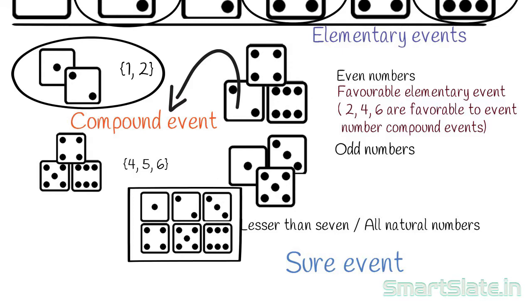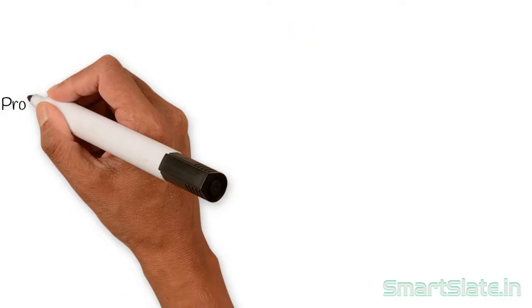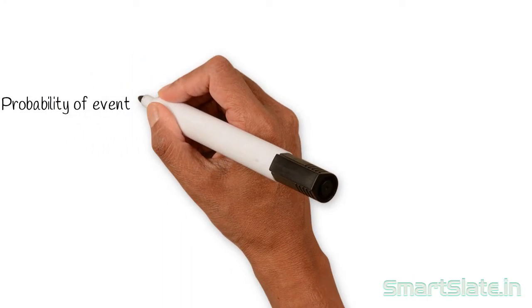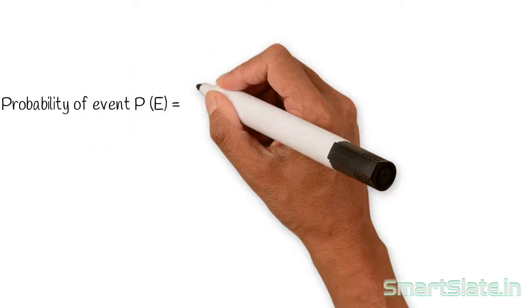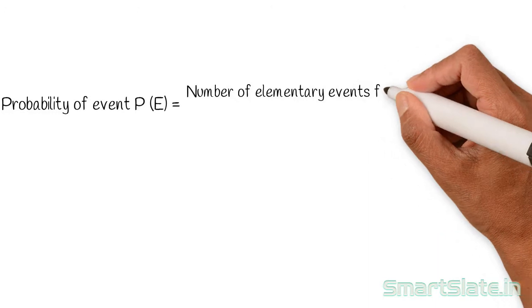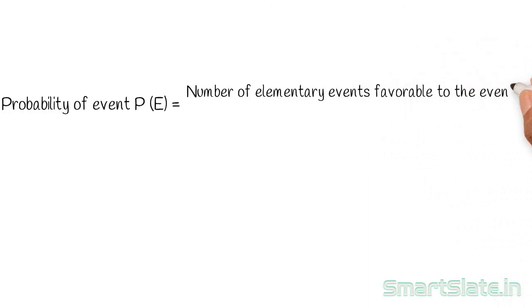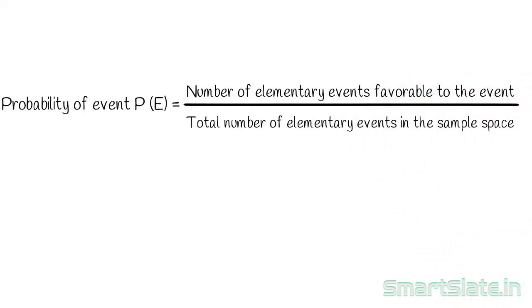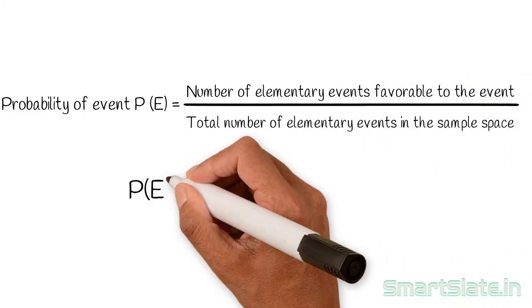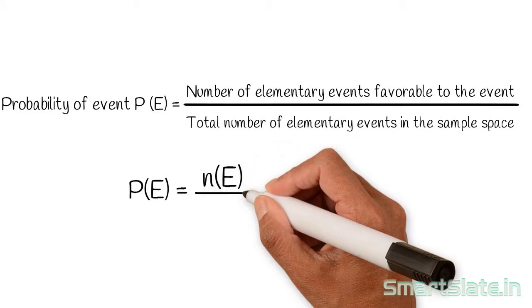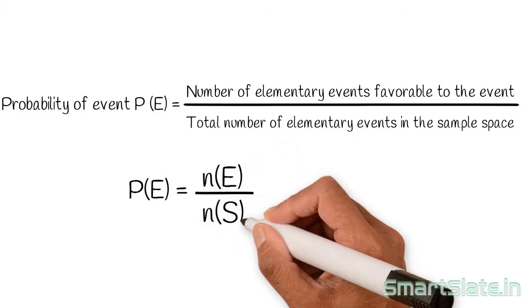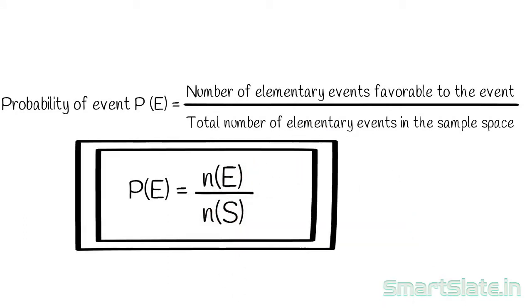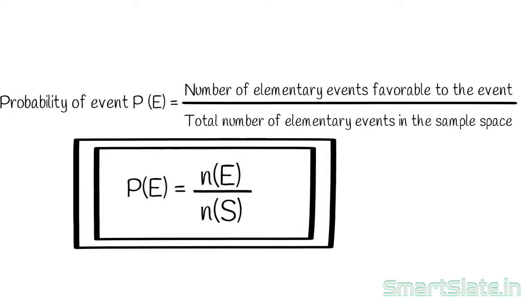Now let's define the probability of events in mathematical terms. The probability of an event equals the number of elementary events favorable to the event divided by the total number of elementary events in the sample space. So the probability of an event is the ratio of the number of favorable outcomes to the total number of elements in the sample space.